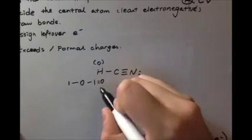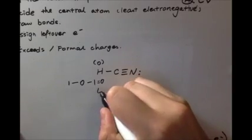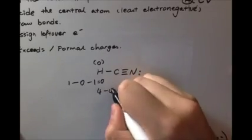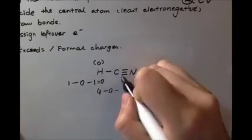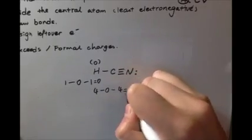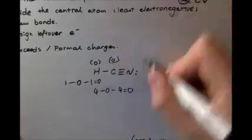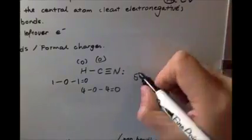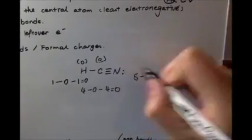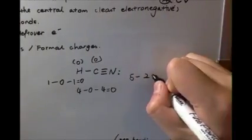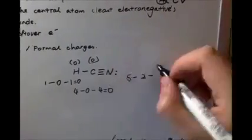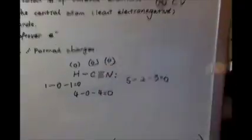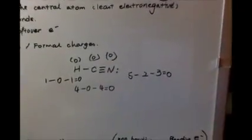For carbon: four minus zero minus four equals zero. For nitrogen: five minus two minus three equals zero. Formal charge is best when it's zero.